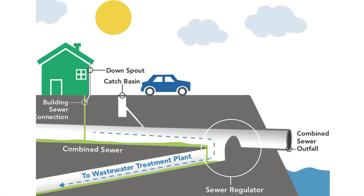At the time, combined sewer systems were the preferred option for managing stormwater and wastewater in urban areas because less pipe was needed and they were considered more affordable than systems that separated stormwater from domestic sewage.